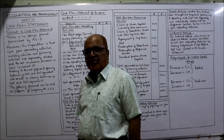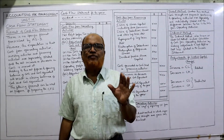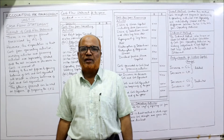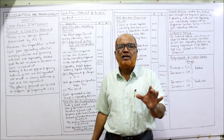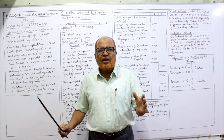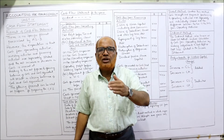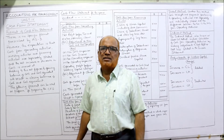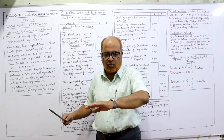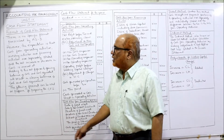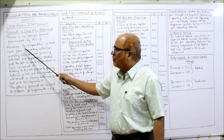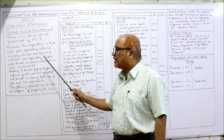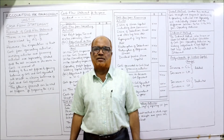Regarding the format of cash flow statement — there is actually no prescribed format given by AS3, the accounting standard issued by the Institute of Chartered Accountants of India. No specific format is given, but the only requirement in the accounting standard is that every cash flow statement should clearly specify the cash inflows and cash outflows from operating activity, investing activity, and financing activity. These should be specifically disclosed and separately stated.